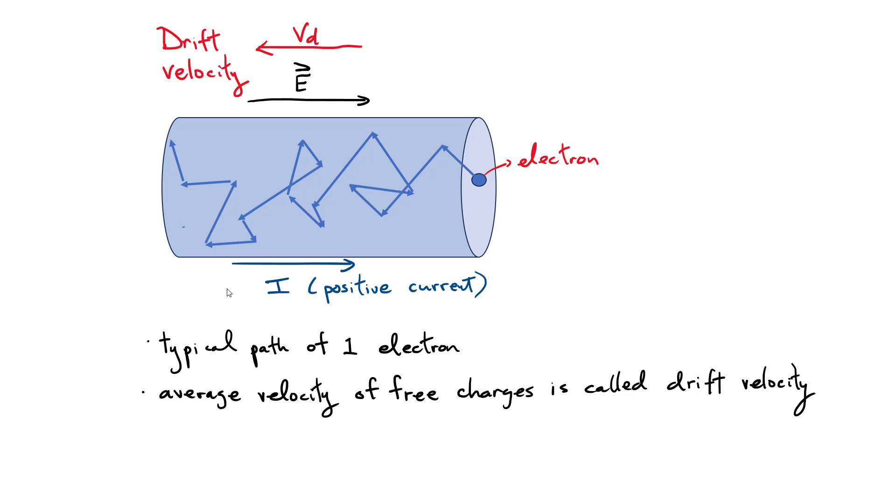Now, this motion, although it goes through all these successive collisions, overall, on average, it looks like the electron is simply going to drift to the left. And that is what they call the drift velocity. It's the average velocity of these free electrons that are free to move in the copper, and that's what is referred to as drift velocity. One thing to note is for negative charges like electrons, the drift velocity is in the opposite direction of the electric field.